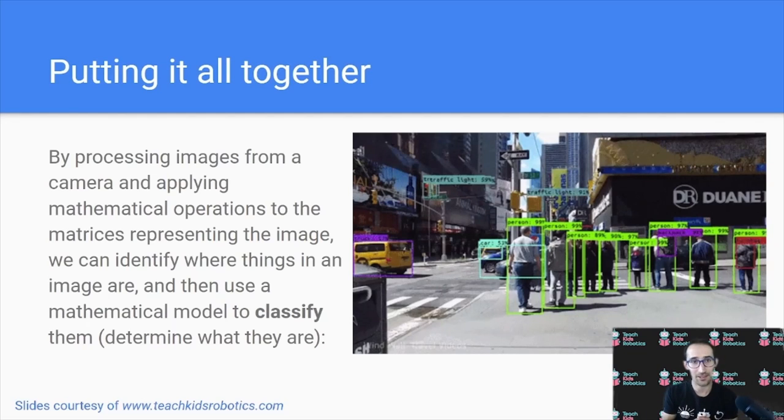Putting it all together, taking digital camera images, translating them to matrices, and performing mathematical operations on those matrices through convolutions allow us to classify, using mathematical models, what actually is in an image.